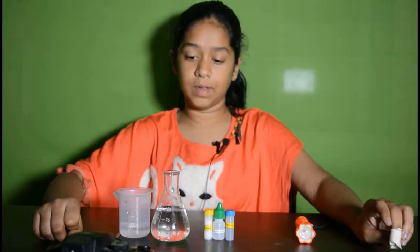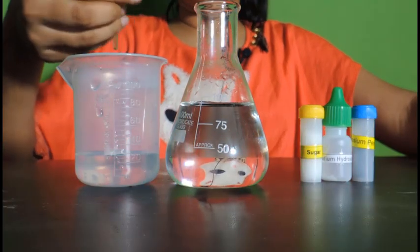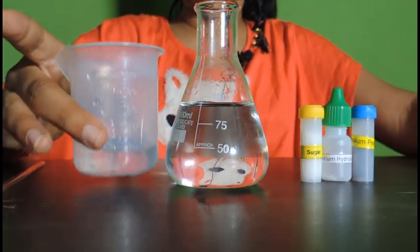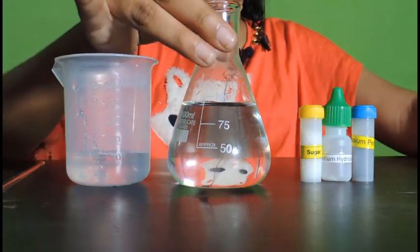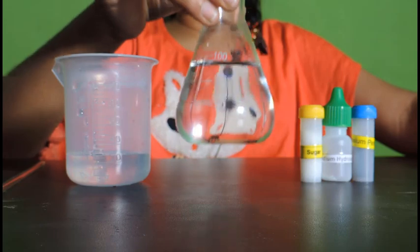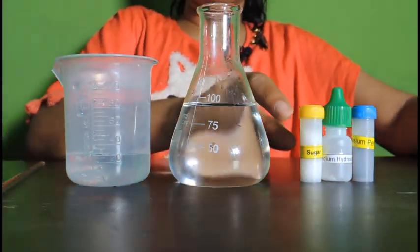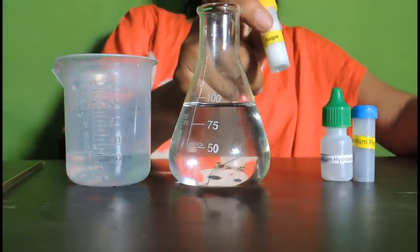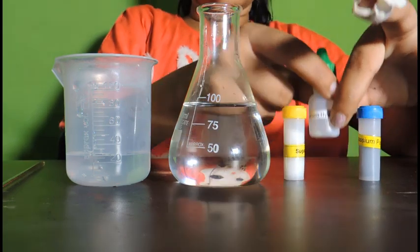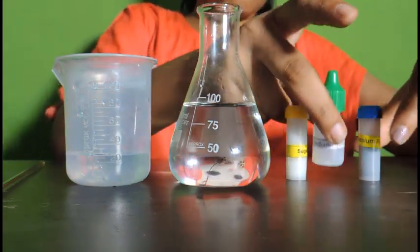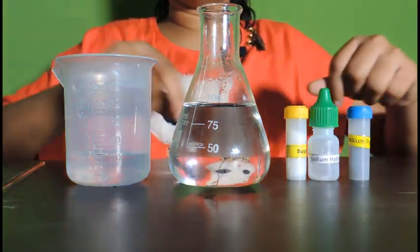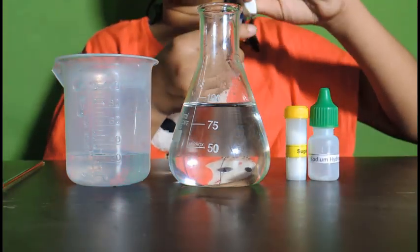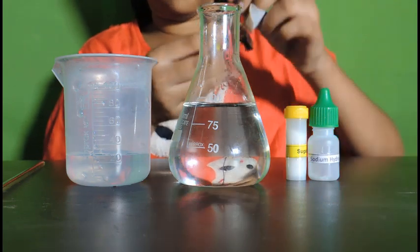The materials required for this experiment are stirrer, beaker with 20 ml of water, conical flask with 100 ml of water, and the chemicals required are sugar, sodium hydroxide, and potassium permanganate.